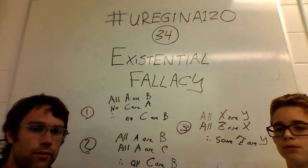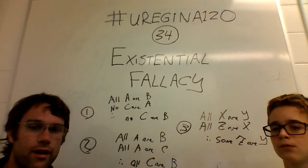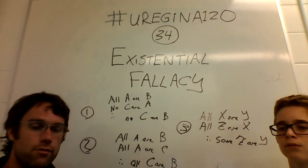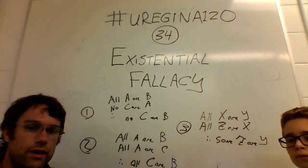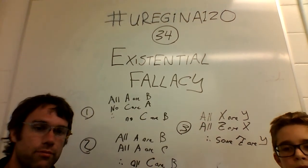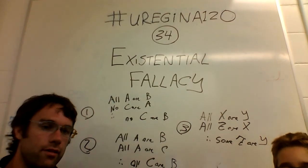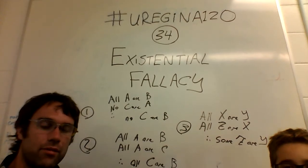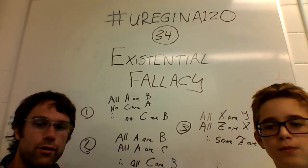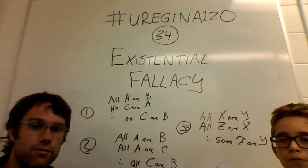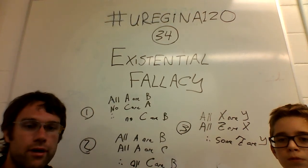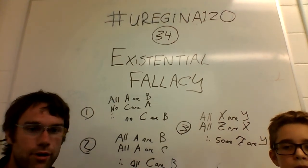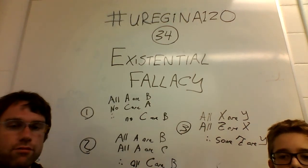Another example: 'Trespassers will be prosecuted, therefore some of those prosecuted will have been trespassers.' Again, if there are no trespassers, then there will not have been any people prosecuted who were trespassers, so the conclusion will have been false. Especially if you have a little warning sign saying 'trespassers will be prosecuted' — if trespassing never happens, then the prosecution never happens. It's kind of setting itself up for a self-defeating situation where the sign itself isn't true, because technically that part is false.